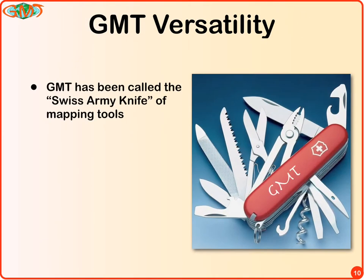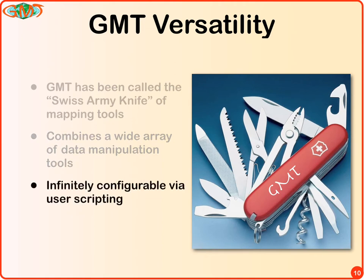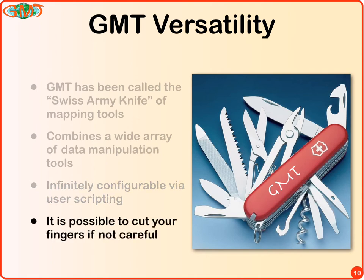GMT has been called the Swiss army knife of mapping tools — a little frightening, and symbolic of the learning curve at the beginning with many new options and ways to go wrong. It combines a wide array of tools that you can configure in various ways by scripting — shell scripts, Perl scripts, Python scripts, and so on. As I said, it's possible to cut your fingers if you're not careful in the beginning until you get your hands around this tool.